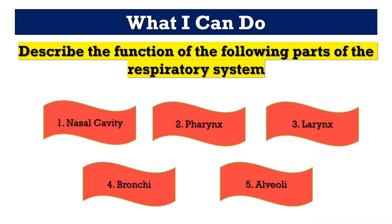What I Can Do: describe the function of the following parts of the respiratory system. Number one, nasal cavity; number two, pharynx; number three, larynx; number four, bronchi; and number five, alveoli.